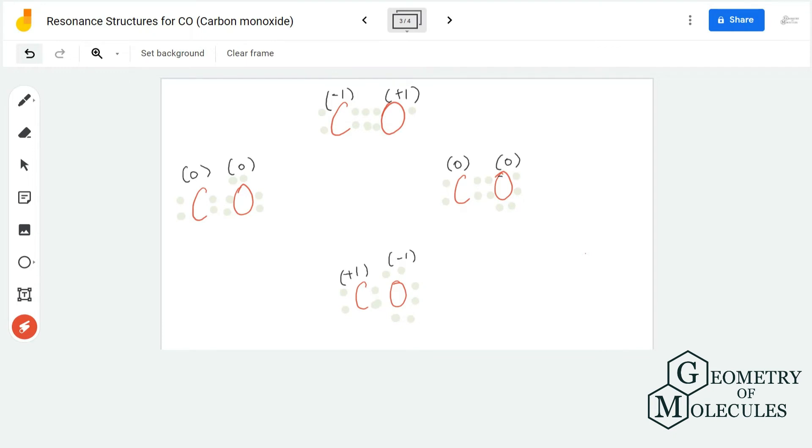So this is also one of the structures that has been considered for CO. There is another structure as well which is considered for carbon monoxide in which there are -1 charges on oxygen and +1 charges on carbon.